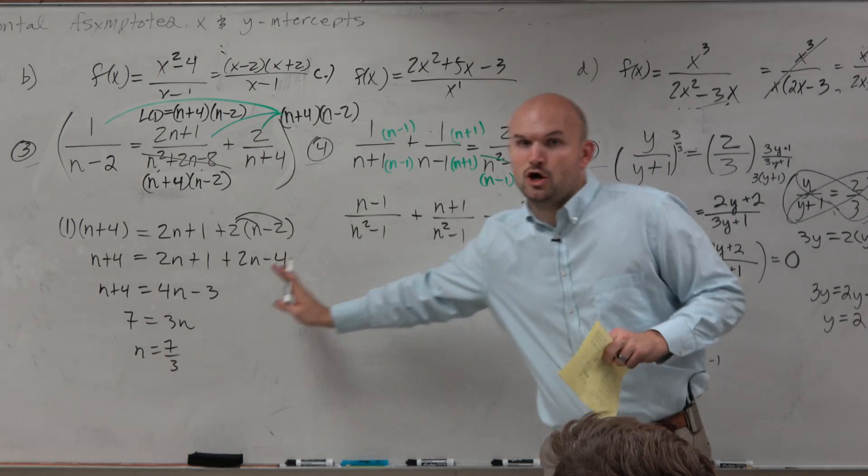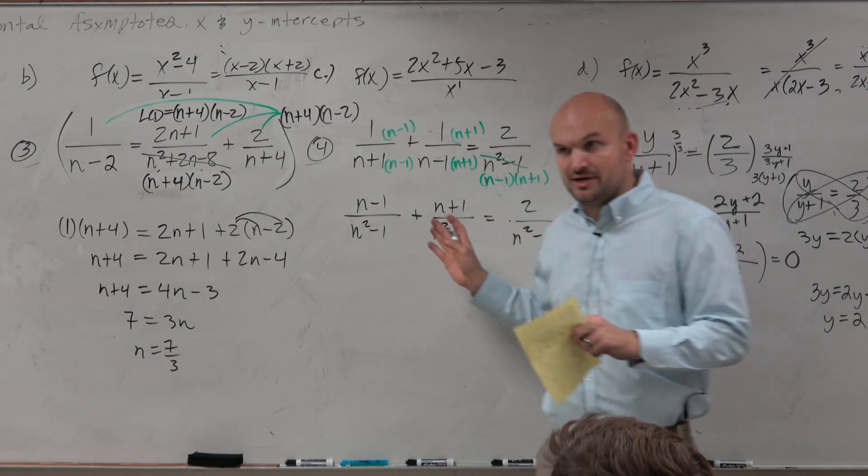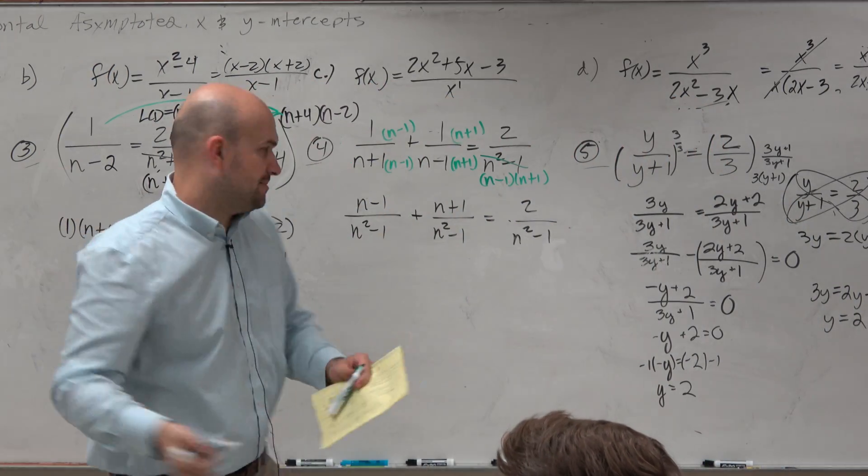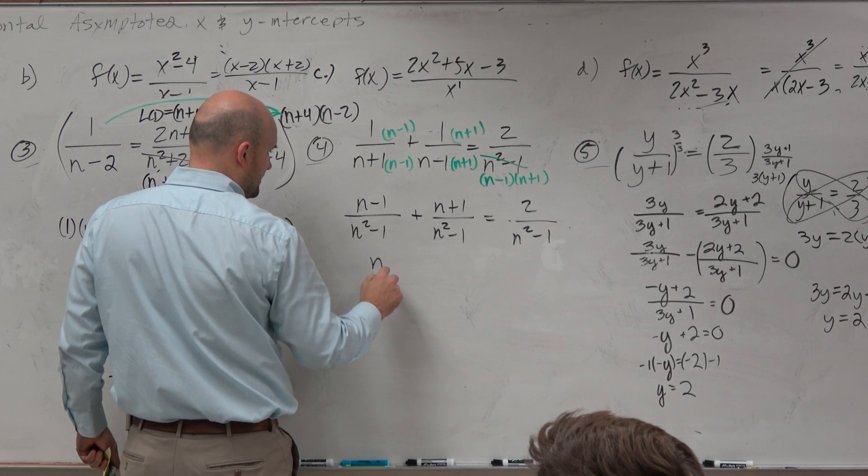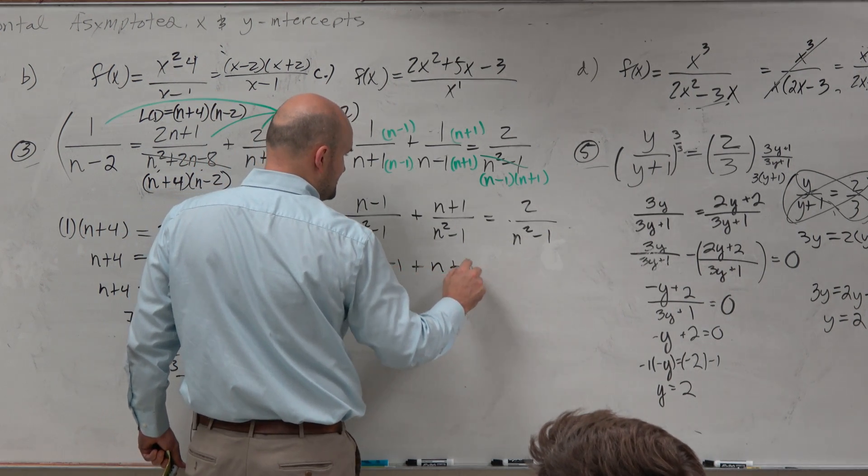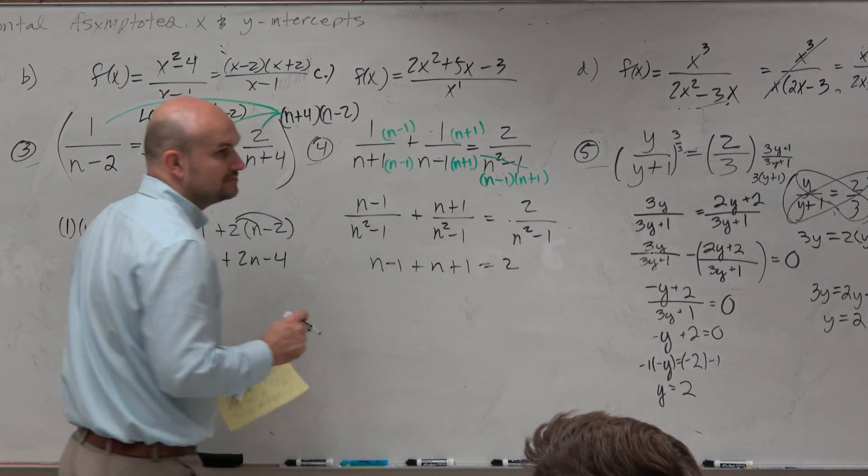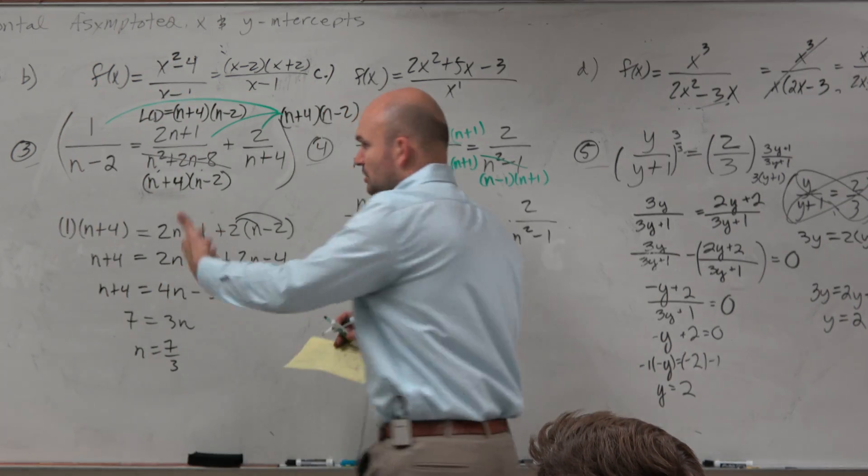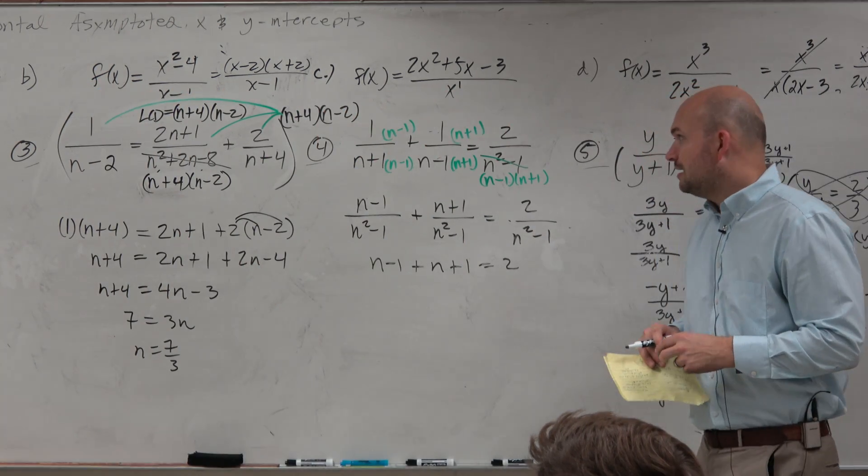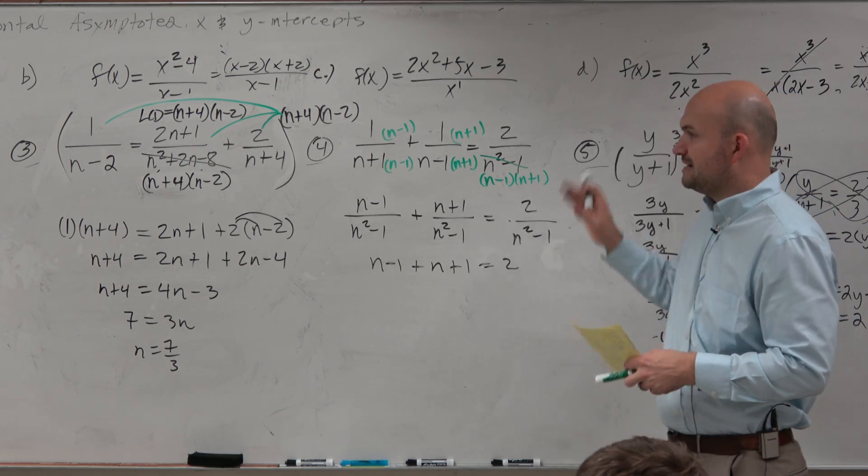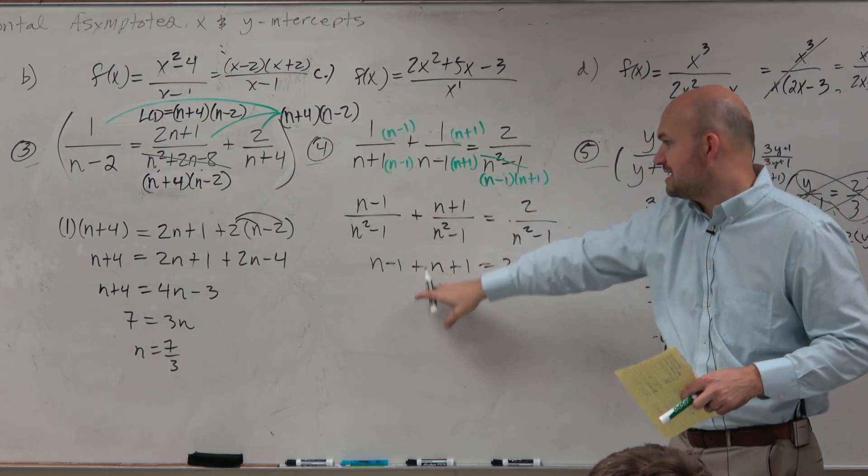And now you guys see that all of these terms have the common denominator. If I multiply by the common denominator, I would just be left with n minus 1 plus n plus 1 equals 2. So you're going to obtain the same result as the same process as I did before. I would have just multiplied by the LCD, and you still would have got the exact same answer.